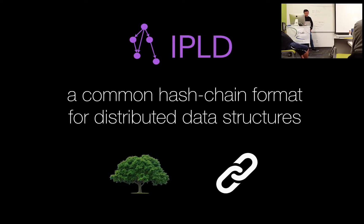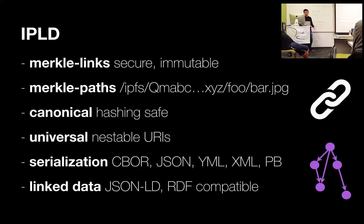IPLD is a common hash chain format for distributed data structures, and it uses a Merkle link approach. A Merkle link is a link between two objects which is content-addressed with the cryptographic hash of the target object. This gives two notable properties: cryptographic identity checking, which enables secure and trustless exchange of data, and immutable data structures, which is excellent for versioning or long-term archiving.